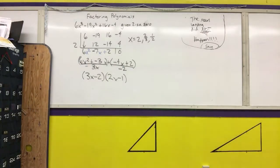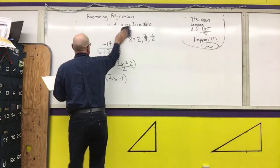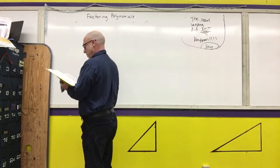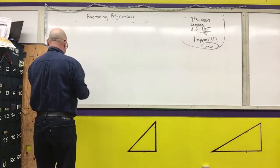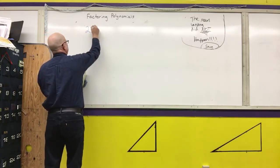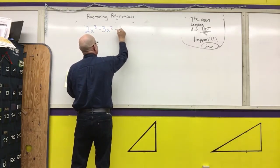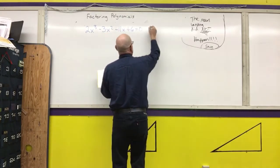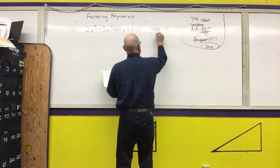I'm going to do one more problem of this type. And it says to solve the given equation given that negative 2 is a zero. So it says 2x cubed minus 3x squared minus 11x plus 6 equals 0. And I am given that negative 2 is a zero.